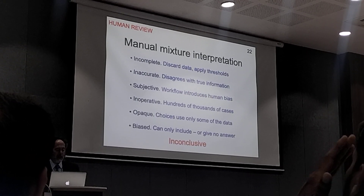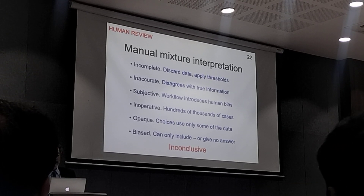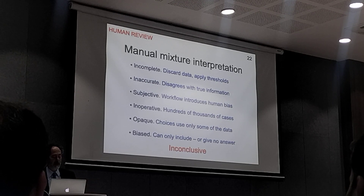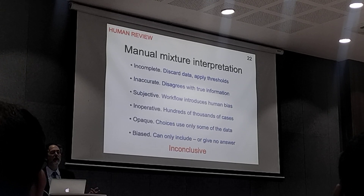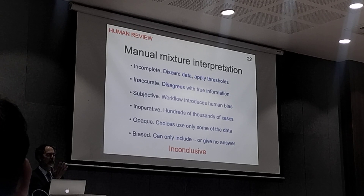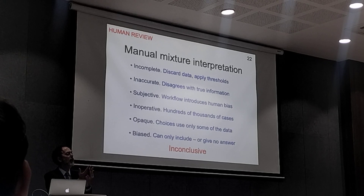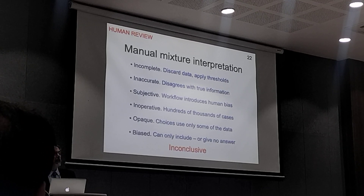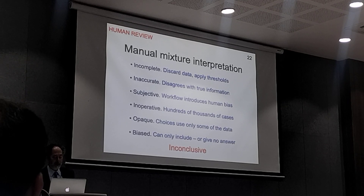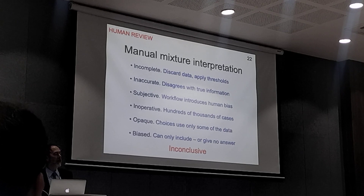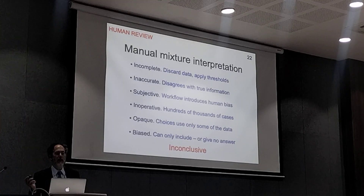In summary, manual mixture interpretation suffers from several problems. It's incomplete — data is discarded and not used due to thresholds. It's inaccurate — when you get an answer, it's most often inconclusive, and the CPI value will disagree with the true information. The method is subjective — the protocols for CPI involve looking at the evidence data and the suspect together, where the data can cause problems. It's inoperative — hundreds of thousands, possibly millions of cases produce no information as inconclusive. The method is opaque — we don't know what's going on in someone's head as they adjust parameters. And it's biased — it can only include, and most often it's inconclusive.